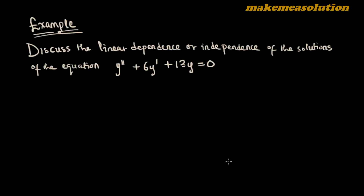Hello guys, welcome to another new example and probably the final example on linear dependence and linear independence of solutions to differential equations. So for this problem, we are to discuss the linear dependence or independence of the solutions of the differential equation y'' + 6y' + 13y = 0. So let's begin.